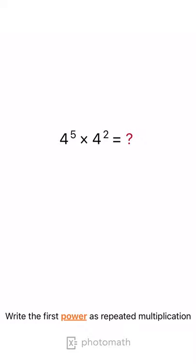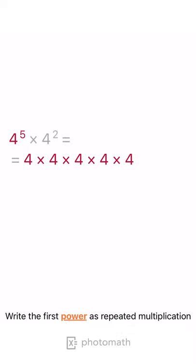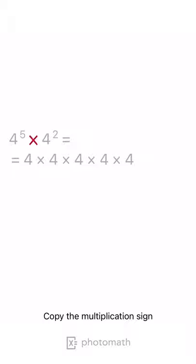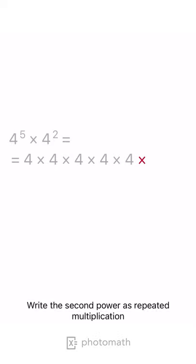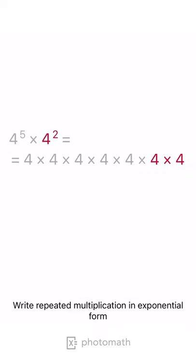Write the first power as repeated multiplication. Copy the multiplication sign. Write the second power as repeated multiplication. Write repeated multiplication in exponential form.